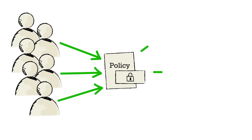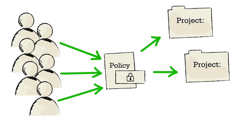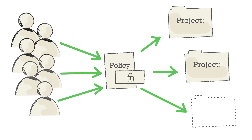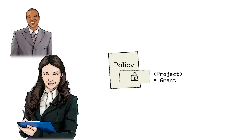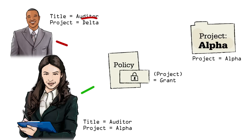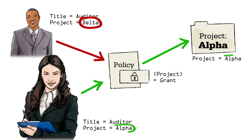However, with ABAC, they are able to centrally establish a policy that applies across all projects, including those that do not yet exist. For example, they can create an attribute-based policy where access is granted only if the values of the project attribute for both subject and object have an identical match. This single policy would ensure that only users assigned to a project get access to the files for that project.